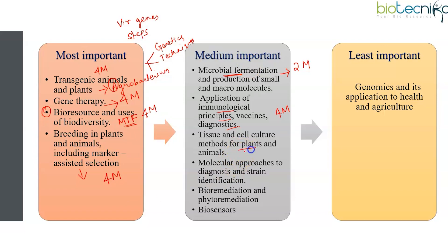Once upon a time, plant tissue culture techniques were a topic from where questions were always expected, in the form of four marks. But if you look at the current trend over the recent four to five question papers, the frequency has dropped — in fact, the last two years have had no questions from this part. So gradually the number of questions is getting reduced. The same is the case with animal tissue culture, which used to yield two marks but has now also stopped.